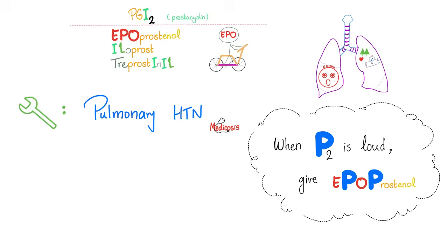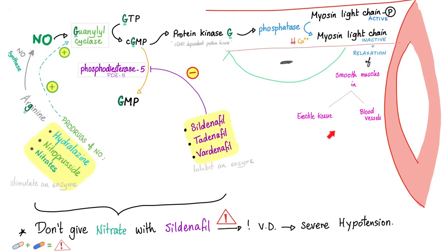How about prostaglandin I2 or prostacyclin — which keeps the blood cycling — such as epoprostenol? We use this for pulmonary hypertension, because in pulmonary hypertension you hear a loud P2 heart sound. So when you hear a loud P2, give something that has P — epoprostenol. Sildenafil will cause erection, but prostaglandin analogs can do the same, especially misoprostol which is an E1 analog.